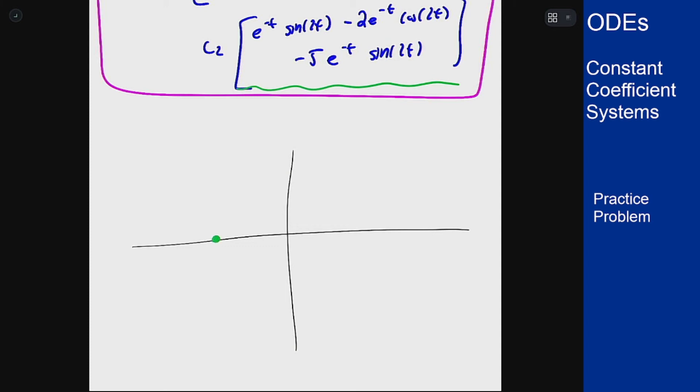Then if I plug in pi over 4 where the cosine goes to 0, I get a 1 in the first component and a minus 5 in the second, and then times e to the minus pi over 4. So it's going to be positive in x, negative in y, so we're going to be down here somewhere.